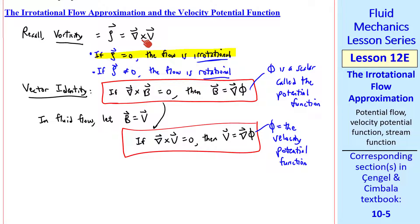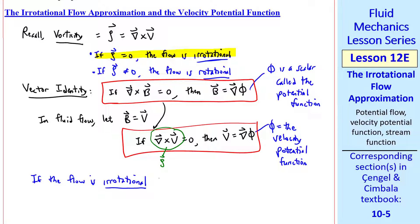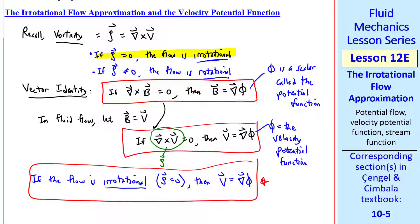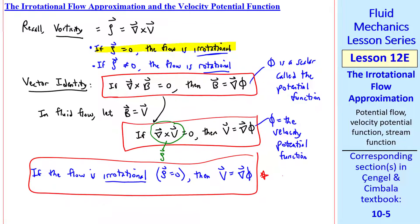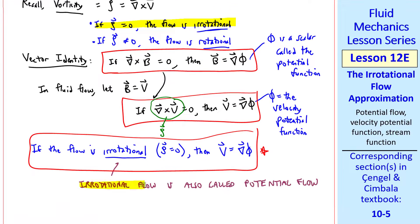As we set up here, del cross v is zeta, the vorticity. So: if the flow is irrotational — in other words, vorticity is zero — then v equals the gradient of phi. Since phi is the velocity potential, irrotational flow is also called potential flow. I'll use these words interchangeably.